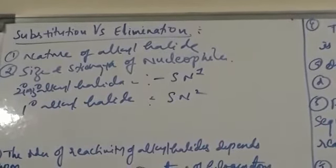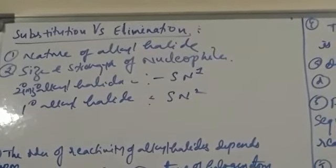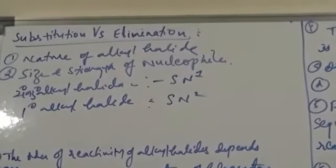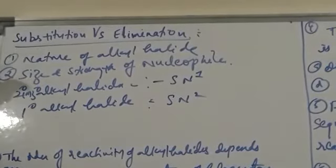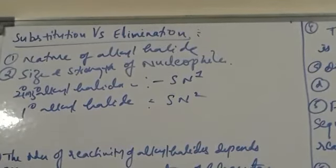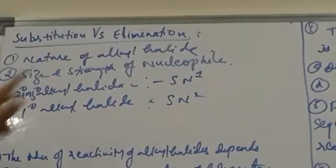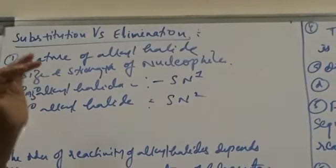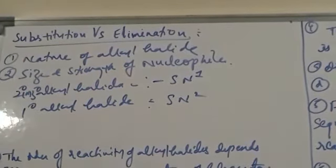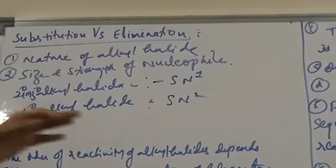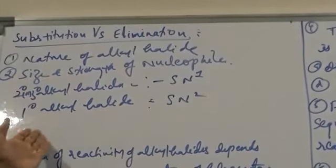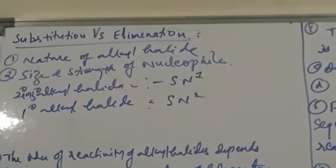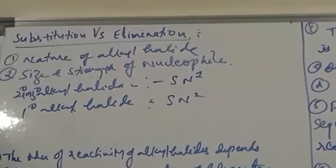Substitution or elimination depends on the strength and size of the nucleophile along with the nature of the alkyl halide. For SN1 reactions, the order of reactivity is: tertiary > secondary > primary. For SN2 reactions, the order is: primary > secondary > tertiary.